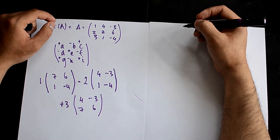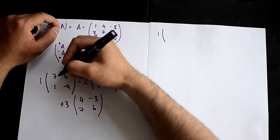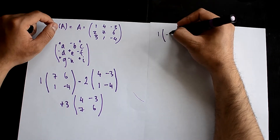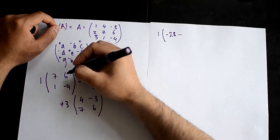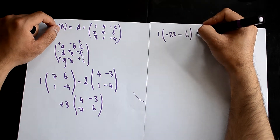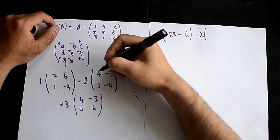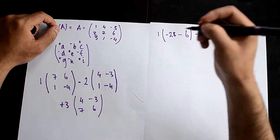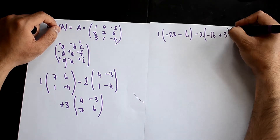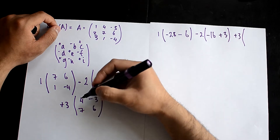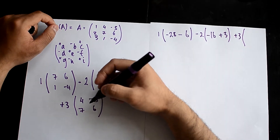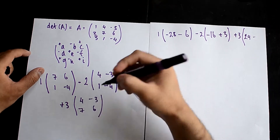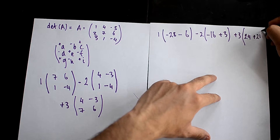Starting with the first bracket: 7 times minus 4 is minus 28, minus 6 times 1 which is minus 6. Then minus 2 times the second bracket: 4 times minus 4 is minus 16, minus minus 3 times 1, so that's plus 3. Then for the third bracket: 6 times 4 is 24, minus 7 times 3 is 21, giving plus 21.